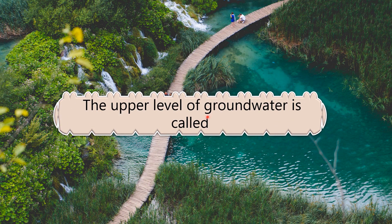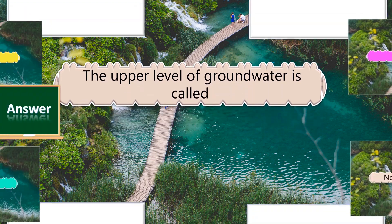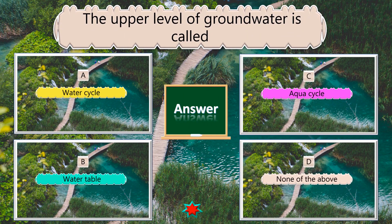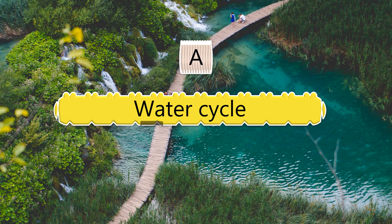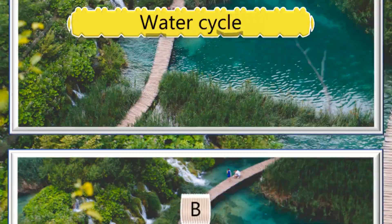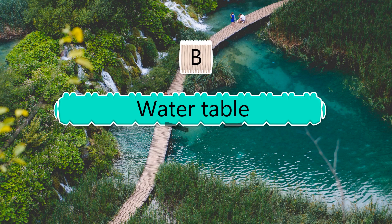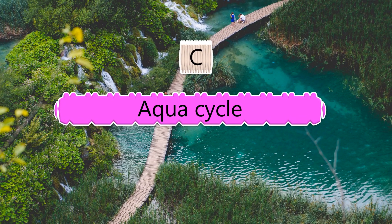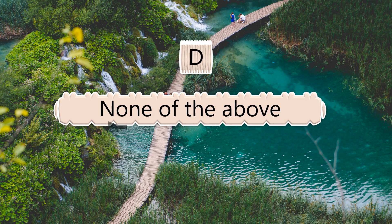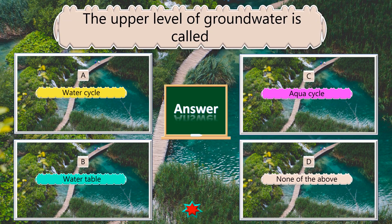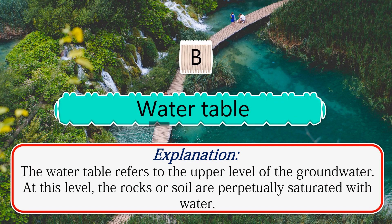The upper level of groundwater is called what? Options: water cycle, water table, aqua cycle. The answer is water table.